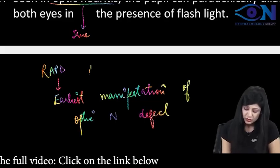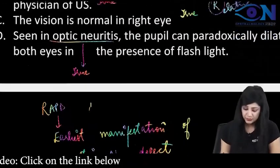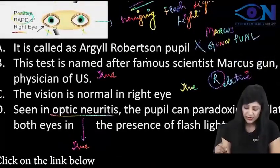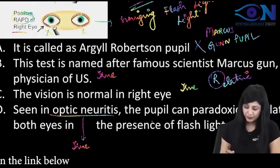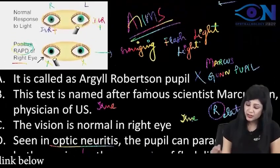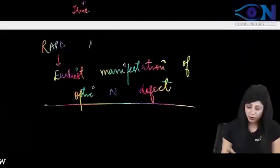So the answer will be B and D. If they are asking 'all except,' then answer will be A, because Argyll Robertson pupil is wrong here.